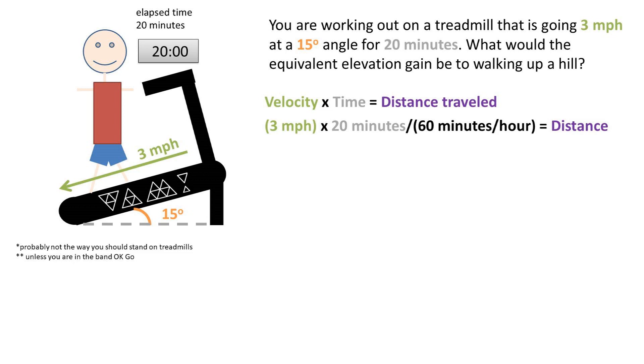So we can take our 3 miles per hour and multiply times our time of 20 minutes. But we need to convert the 20 minutes into hours, so we'll divide by 60 minutes because there are 60 minutes in an hour. Plugging in our numbers into the calculator, we get a distance of 1 mile traveled.